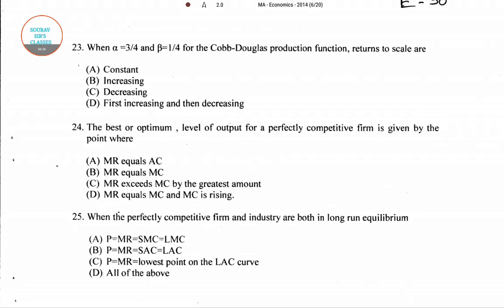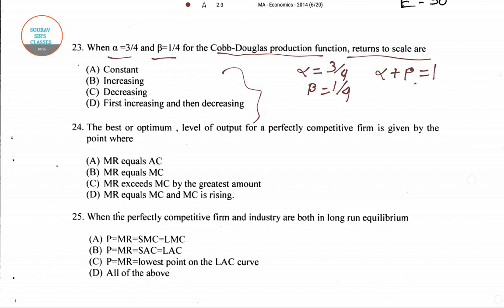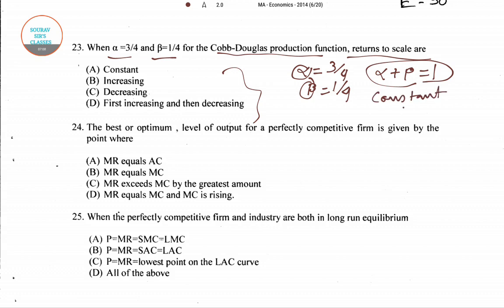Question number 23: When alpha equals 3/4 and beta equals 1/4 for the Cobb-Douglas production function, what are the returns to scale? Alpha plus beta equals 3/4 + 1/4 = 1. When alpha plus beta equals 1, it indicates constant returns to scale. So the right answer for question number 23 is option A.